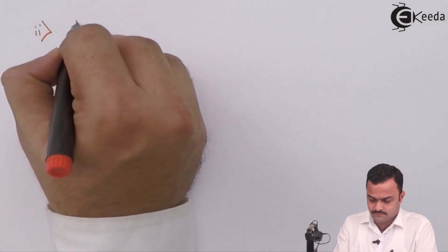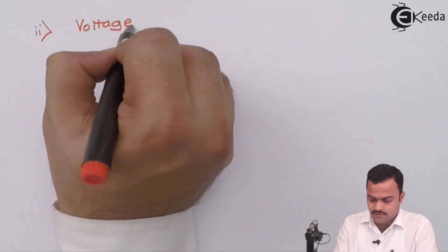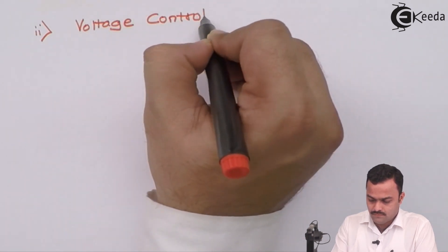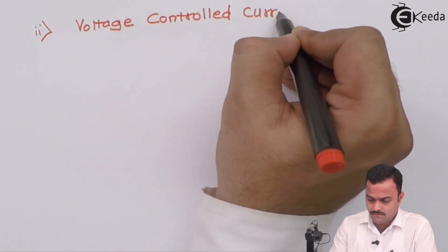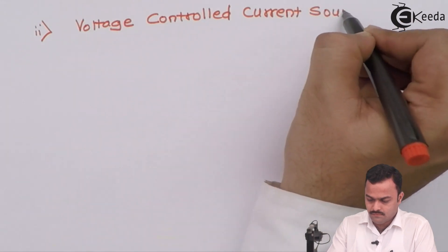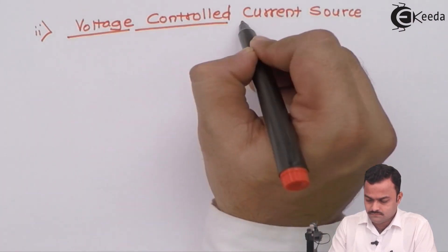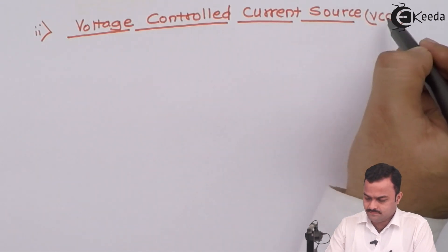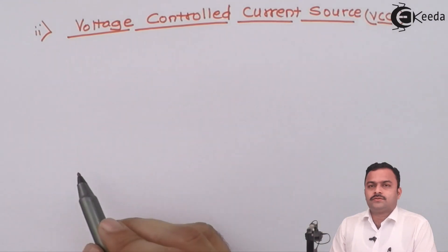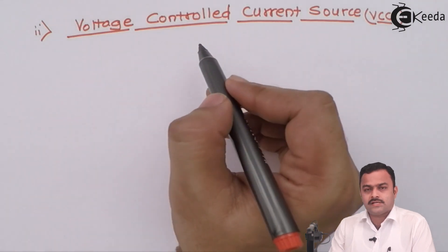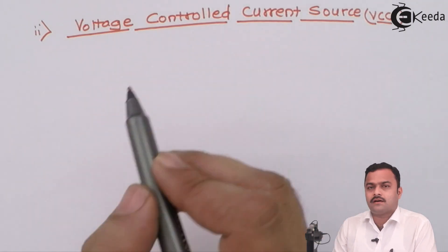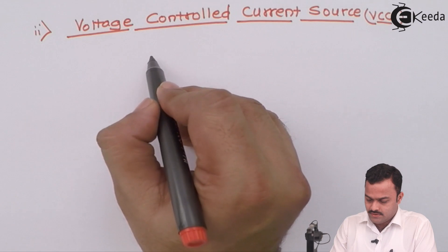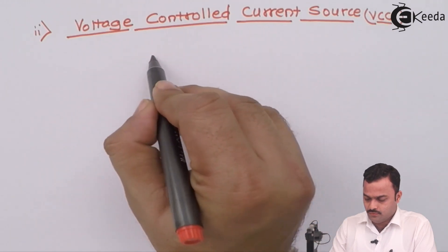It is voltage control current source, can be considered as VCCS. So it depends upon voltage only. But I am getting a current source at the output side. So once again we will consider the same two port, two terminal circuit.